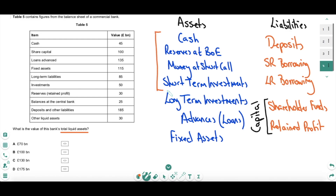What economists normally say is that the first four assets are a bank's liquid assets — cash, reserves at the Bank of England, money at short call, and short-term investments. These are what we use to calculate total liquid assets for a liquidity ratio. Going through the table one by one: cash — yes, a liquid asset; share capital — a liability; loans or advances — not liquid assets; fixed assets — not liquid assets; long-term liabilities — liabilities; investments — dubious, because short-term investments are liquid but long-term aren't, and they haven't specified, so we'll come back to that; retained profit — a liability; balances at the Bank of England — yes, a liquid asset; deposits and other liabilities — liabilities; other liquid assets — they're telling us these are liquid assets, possibly money at short call.